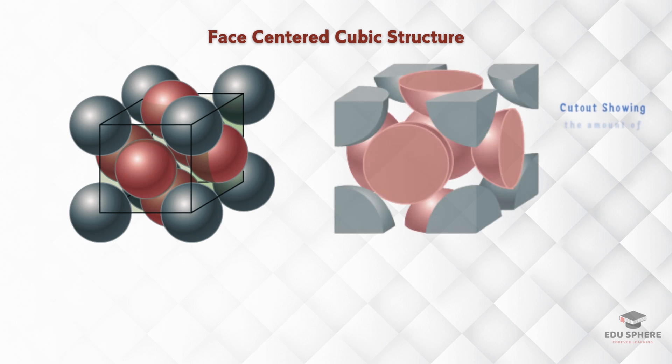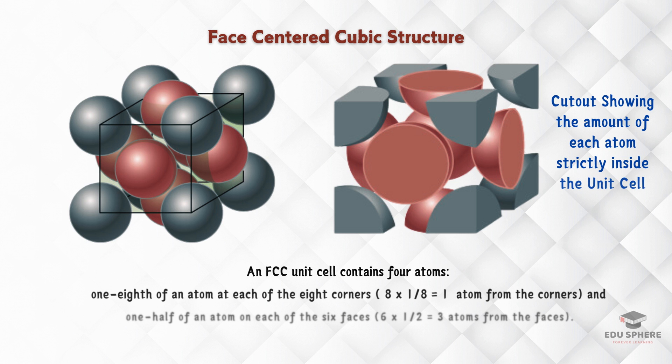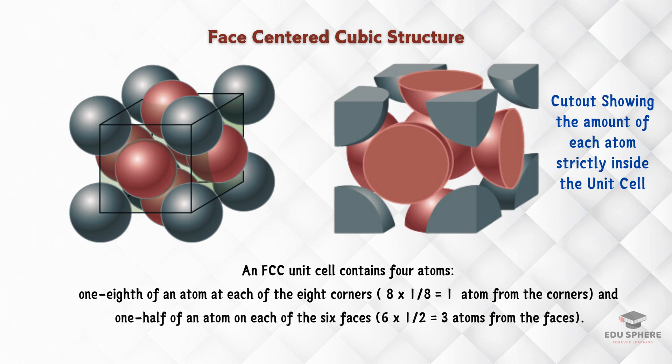For each corner sphere, we only count one-eighth because it belongs to eight unit cells. But on the faces, each sphere belongs to only two unit cells, so we count half an atom each. Adding it all up, we get one atom from the corners and three atoms from the faces, which adds up to a total of four atoms per unit cell. So, it can accommodate more atoms than BCC.